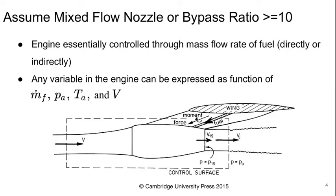We'll start by assuming a mixed flow nozzle with a bypass ratio greater than 10. So basically we assume that at the exit of the engine, the bypass and core flows have already mixed together, and the bypass ratio is so high that we really only have to think about the flow in the bypass — or that it's fully mixed either way, which is kind of equivalent. The engine is essentially controlled by controlling the mass flow rate of fuel, either directly or indirectly.